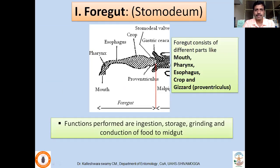The important parts present in the foregut region are the mouth, pharynx, esophagus, crop, and gizzard. The gizzard is also called the proventriculus. The important functions performed by the foregut are ingestion of food, storage of food, grinding, and conduction of food into the midgut.